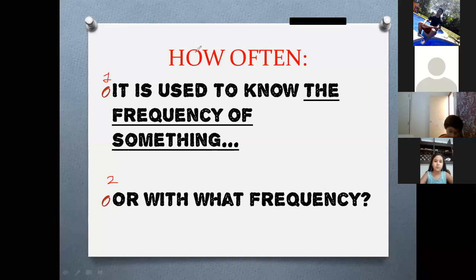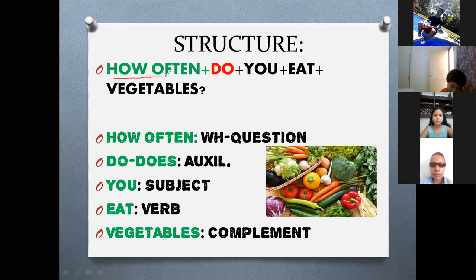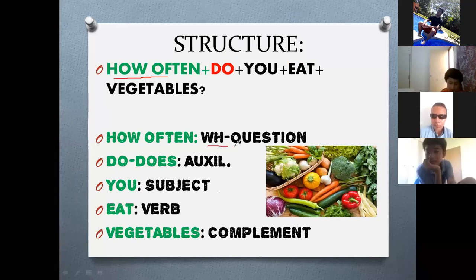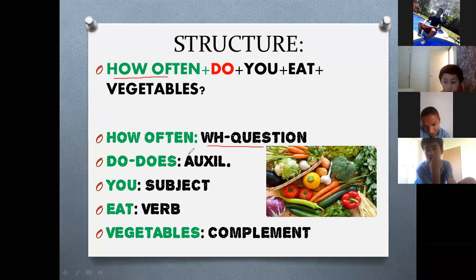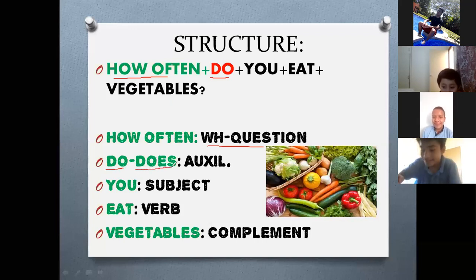Now, the second structure. This is similar but changed a little bit. 'How often' is the WH question. And 'do' or 'does' is the auxiliary. Do and does — the pronunciation is 'do' and 'does.' They are auxiliaries. Be careful with this.